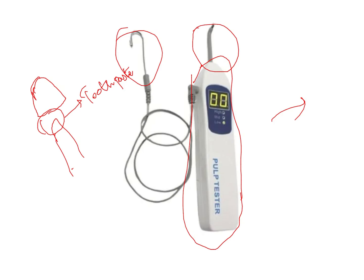After recording the control teeth readings, you place the electric pulp tester on the maxillary right central incisor — the tooth in question — and measure its reading. Comparing this reading to the control teeth readings allows you to understand the exact status or condition of that pulp.